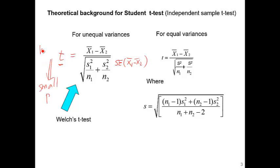Higher t converts to smaller p-value. In this video, we don't go into detail of how to convert t to p — the computer does it automatically. So our goal is to have a bigger difference and a smaller standard error.